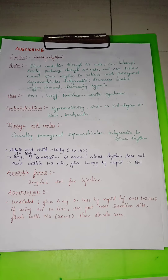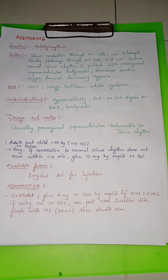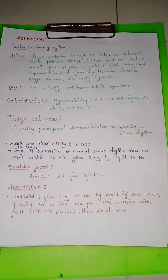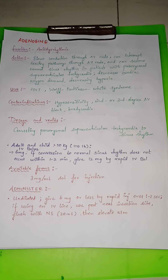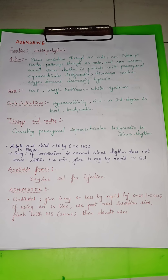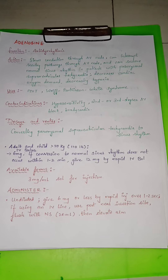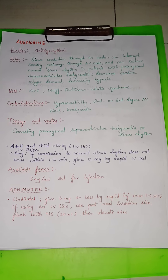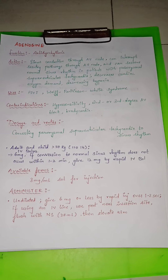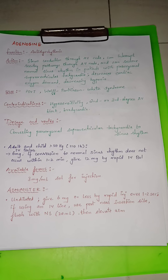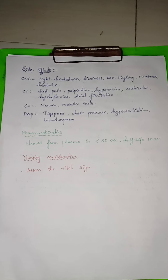For administration: if a patient is presenting with supraventricular tachycardia, without diluting — in undiluted form — give 6 mg or less by rapid injection over 1 to 6 seconds. If using an IV line, use the port nearest to the insertion site, flush with normal saline 20 mL, then elevate the arm, as this medicine is very fast-acting.